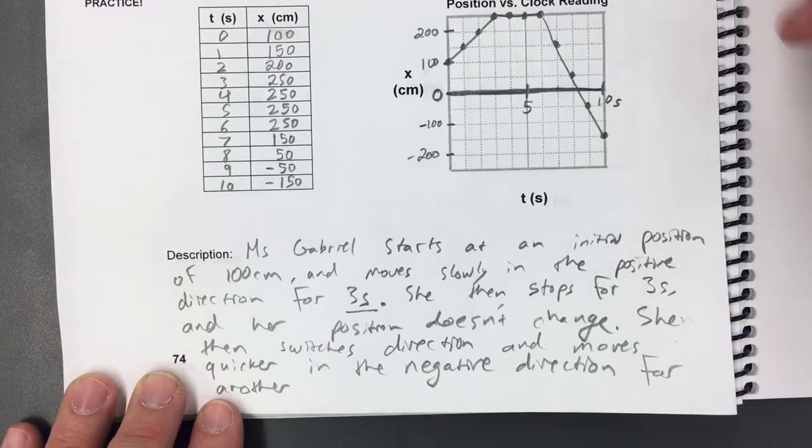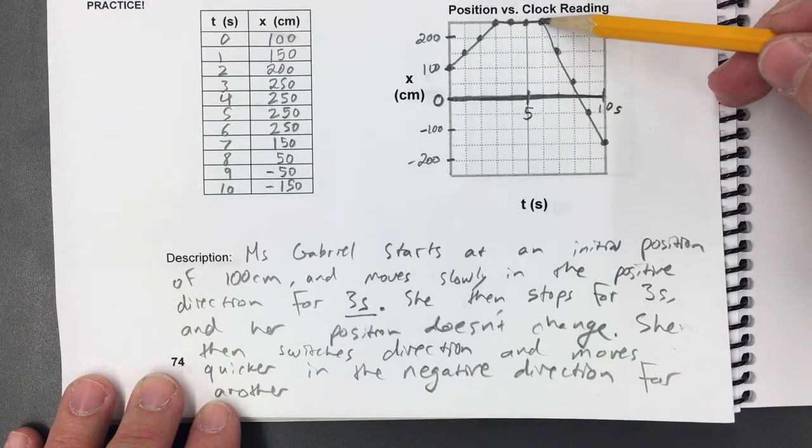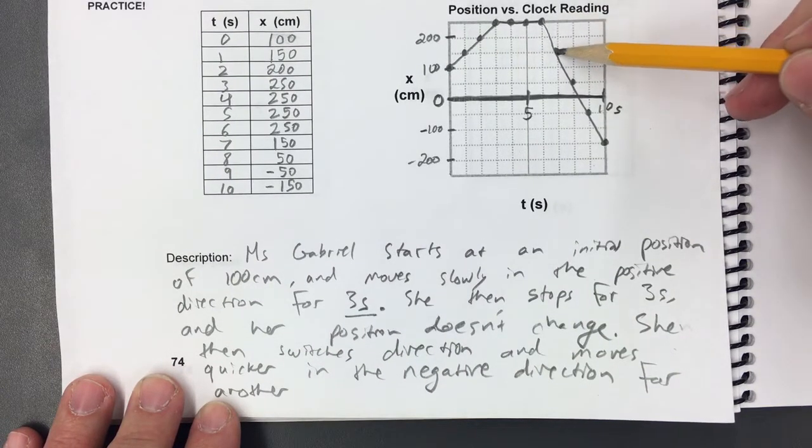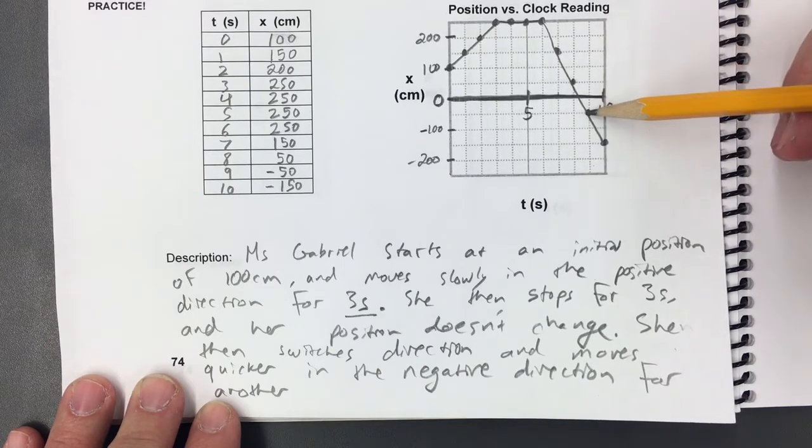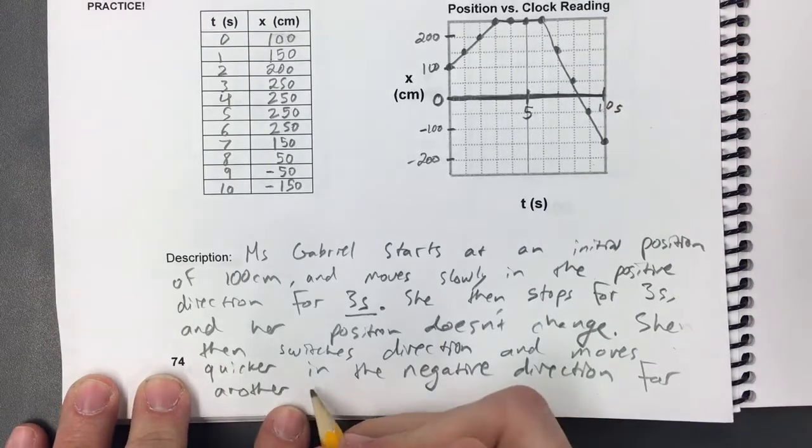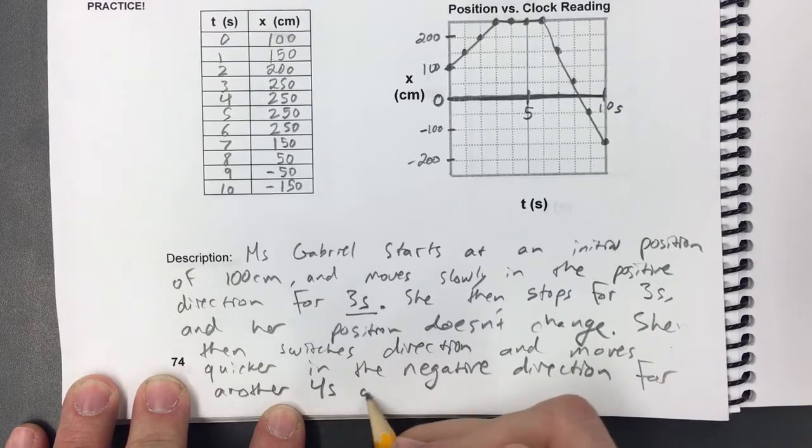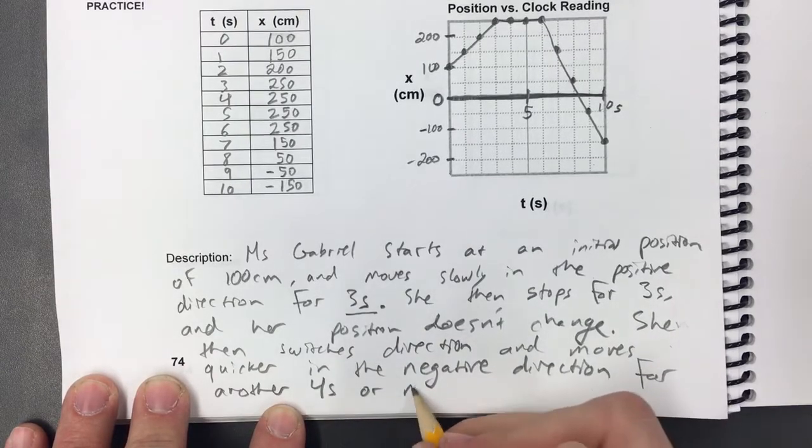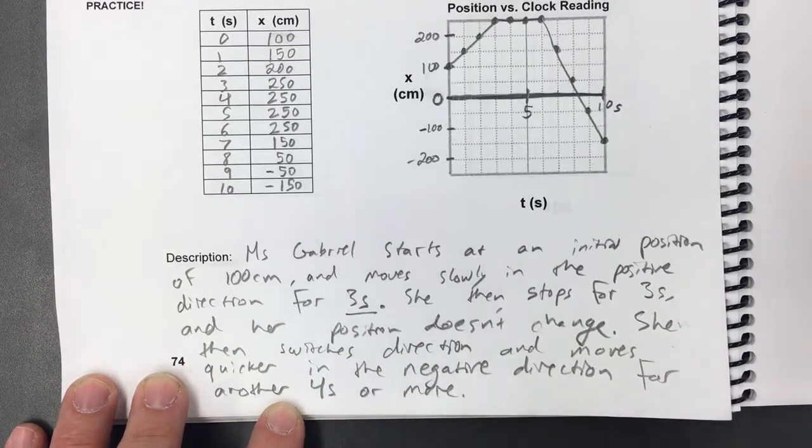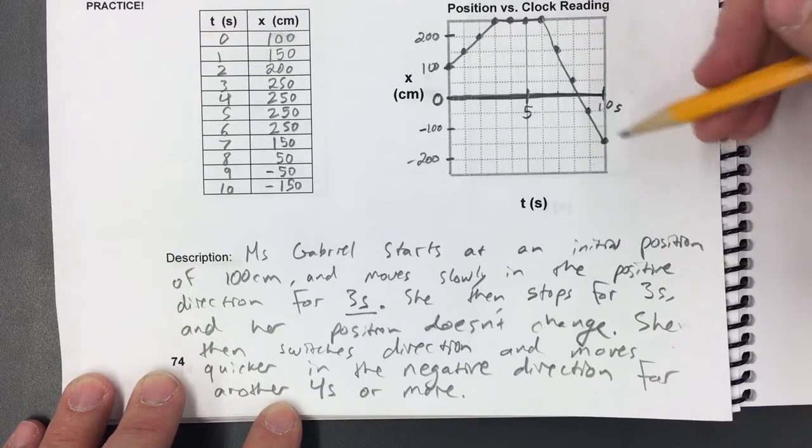If we want to figure out how much time she moves in the negative direction for, we need to say, okay, she's moving for one second, two seconds, three seconds, four seconds. I'm actually going to add for another four seconds or more because we don't know what happens after this graph ends.